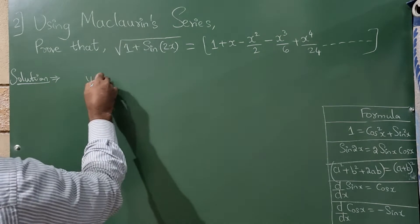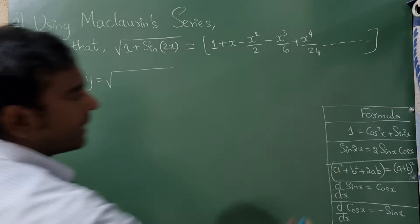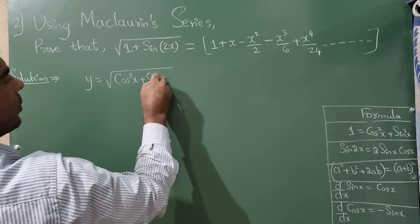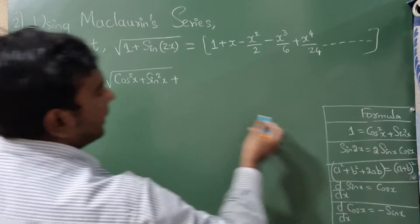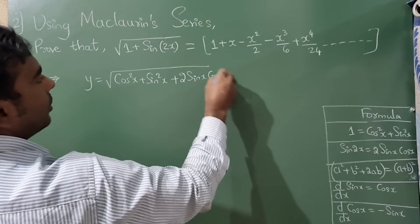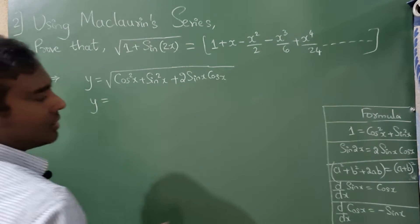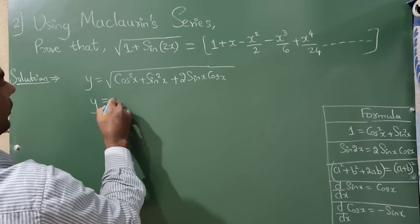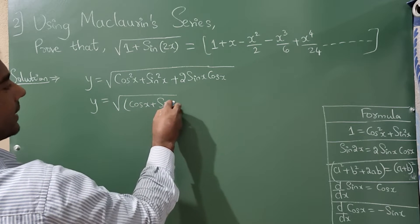Let y = √(1 + sin 2x). Now, 1 can be written as cos²x + sin²x, and sin 2x = 2·sin x·cos x. So the expression inside the root becomes cos²x + sin²x + 2·sin x·cos x, which looks like a² + 2ab + b², matching the formula (a + b)².